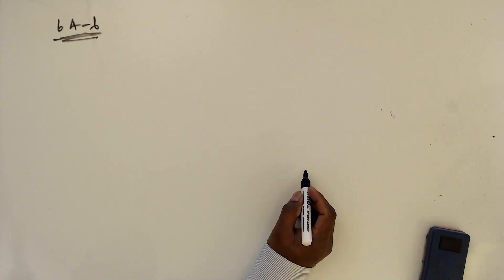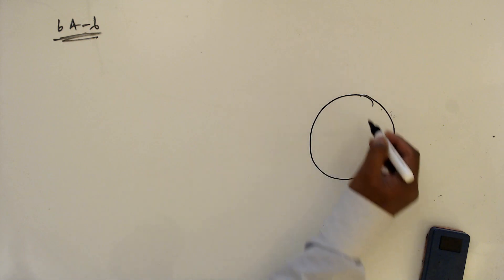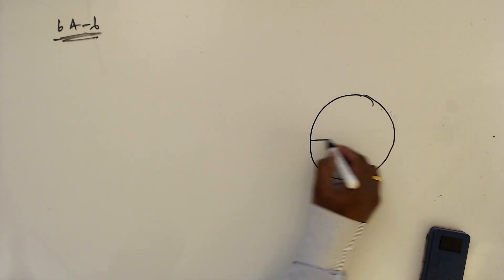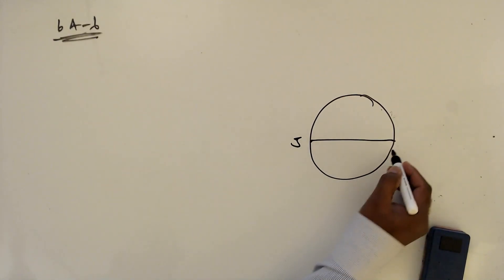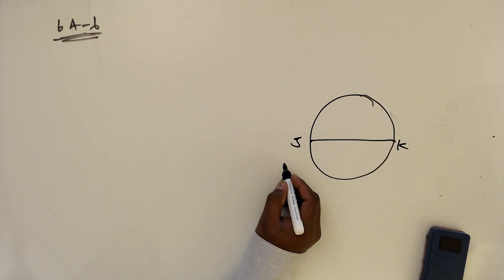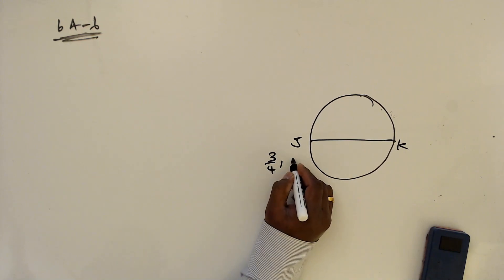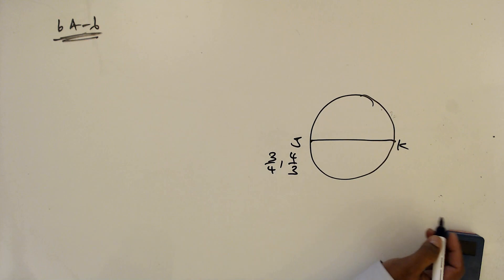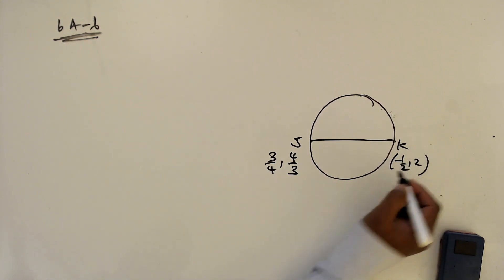Question number six. A circle has diameter JK, with J at coordinates (3/4, 4/3) and K at (-1/2, 2).